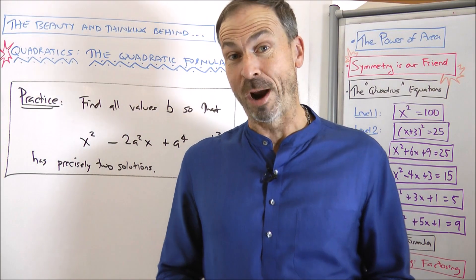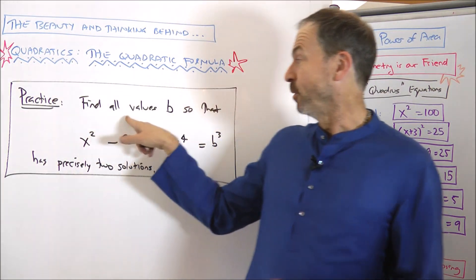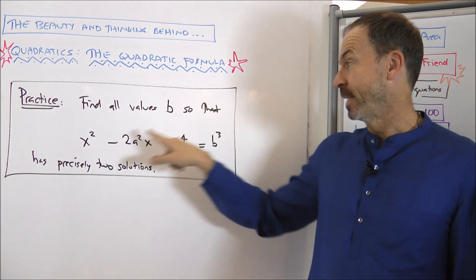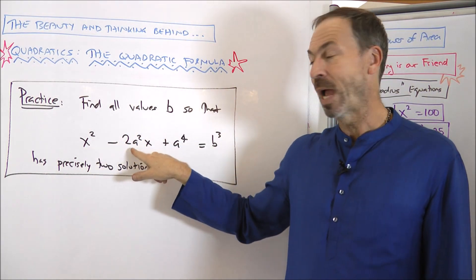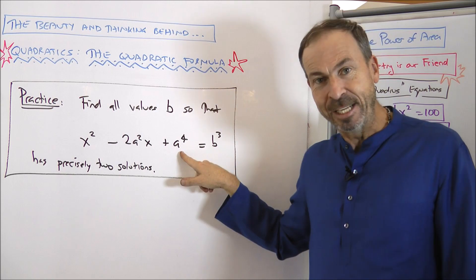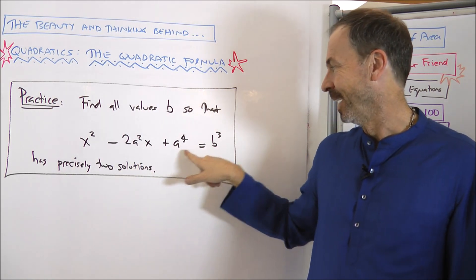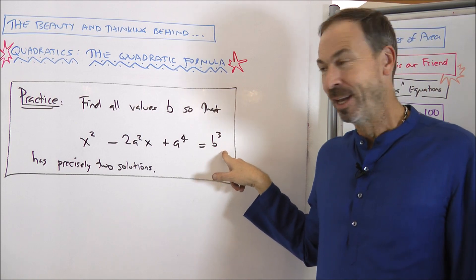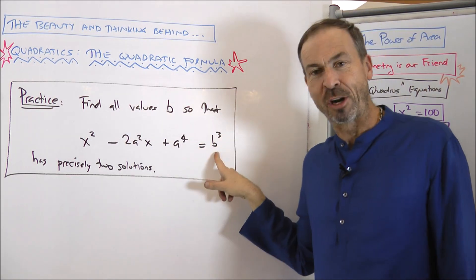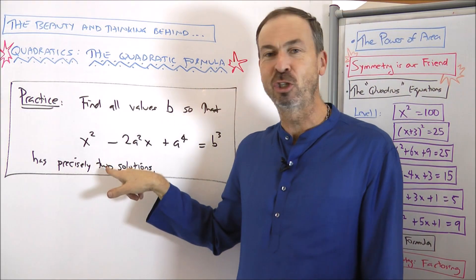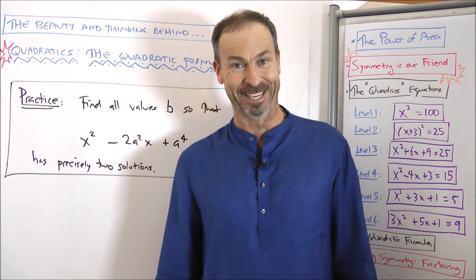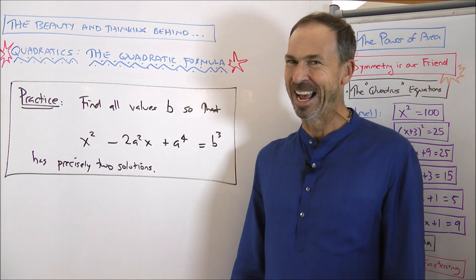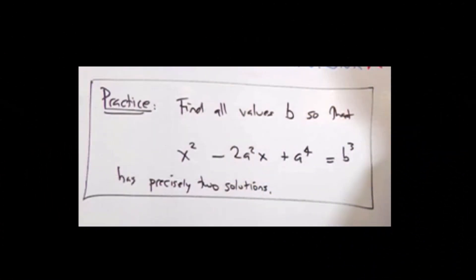Okay, here's a very strange practice problem for you. Find all the values b so that x squared minus 2a squared x plus a to the fourth, so these little a's here, equals b cubed. So, it's a very strange quadratic equation. Find me all the values b so that this quadratic equation has precisely two solutions. Can you do it? It is strange. Good luck.